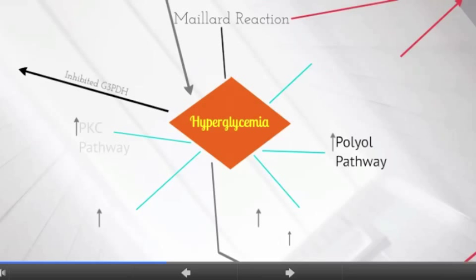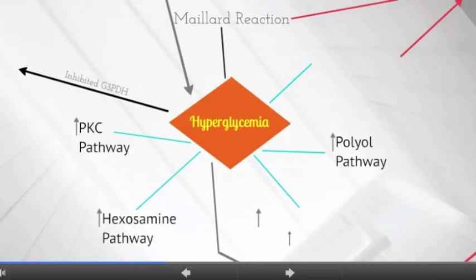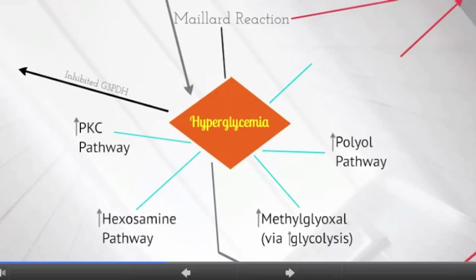These pathways include: increased polyol or aldose reductase pathway, increased protein kinase C activity, increased hexosamine pathway, and increased production of reactive carbonyl methylglyoxal.